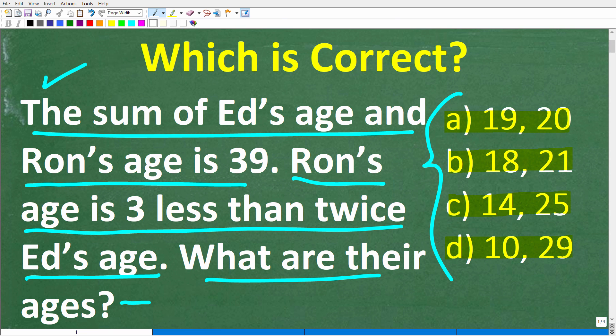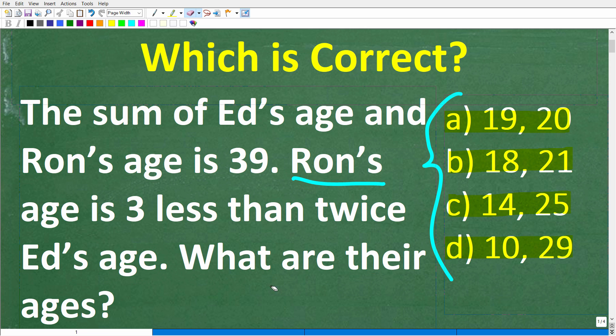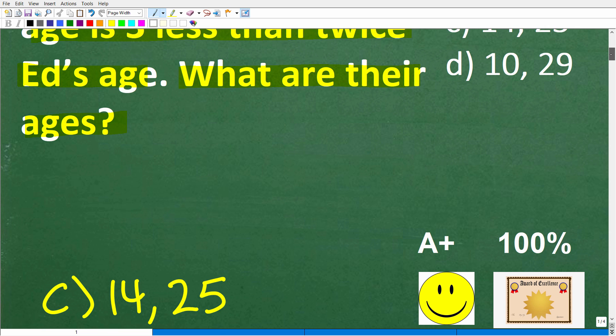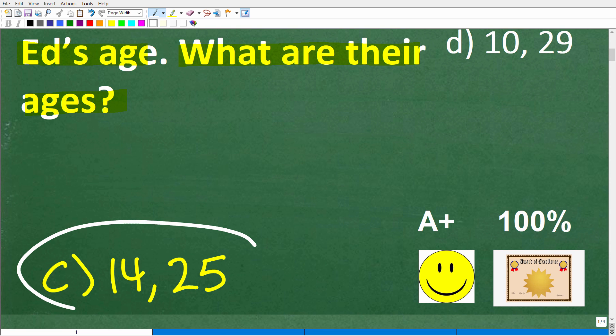All right, let's take another look at this problem. Now, I did say that you're going to have to use some algebra here, but maybe not. So the problem, again, is the sum of Ed's age and Ron's age is 39. Ron's age is three less than twice Ed's age. What are their ages? Let's take a look at the right answer. The correct answer here is C, 14 and 25.